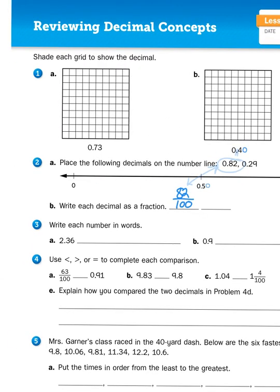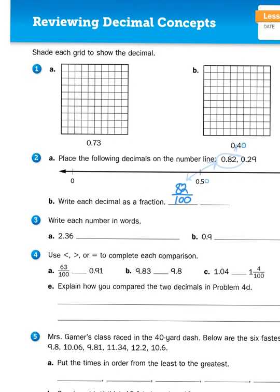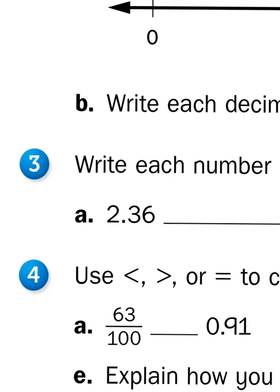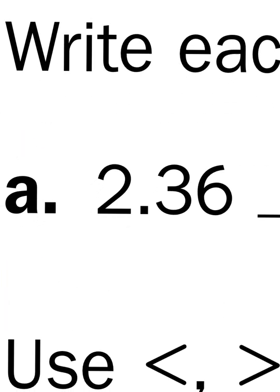Write each number in words. Well, say the number out loud and you've got your words. 2 and 36 hundredths. That's the number for 3a. We don't say 2 point 36 or we don't say 2 dot 36.